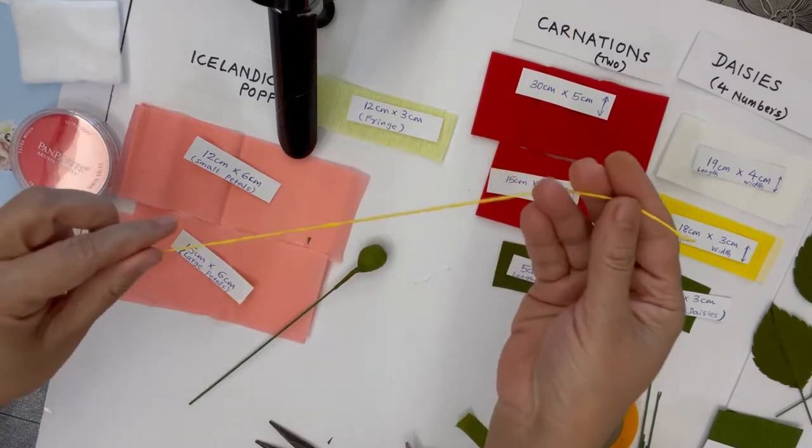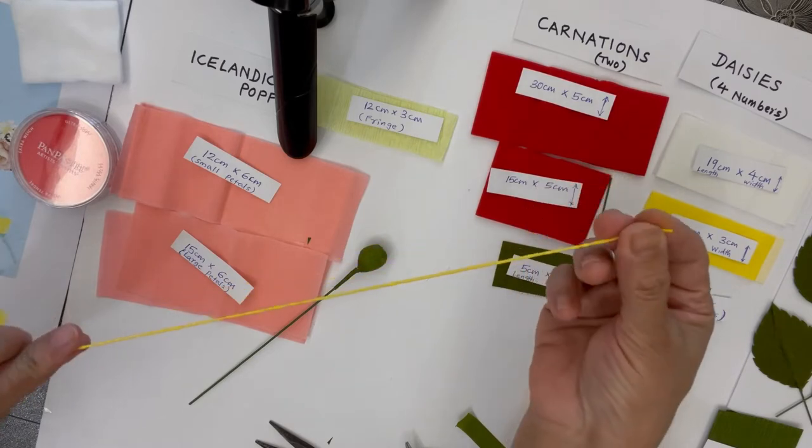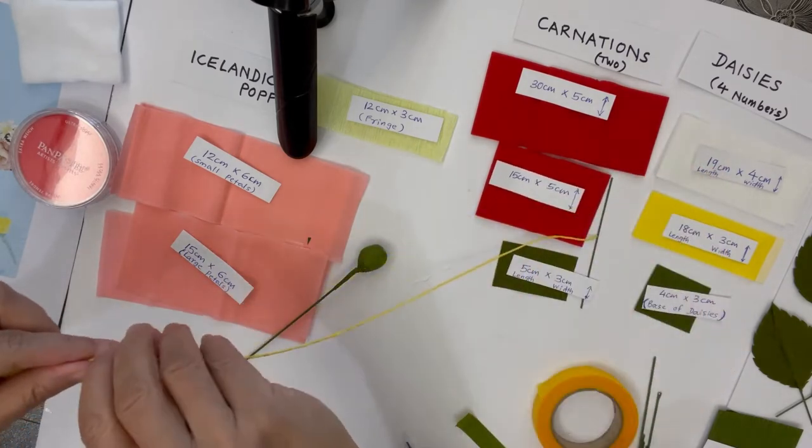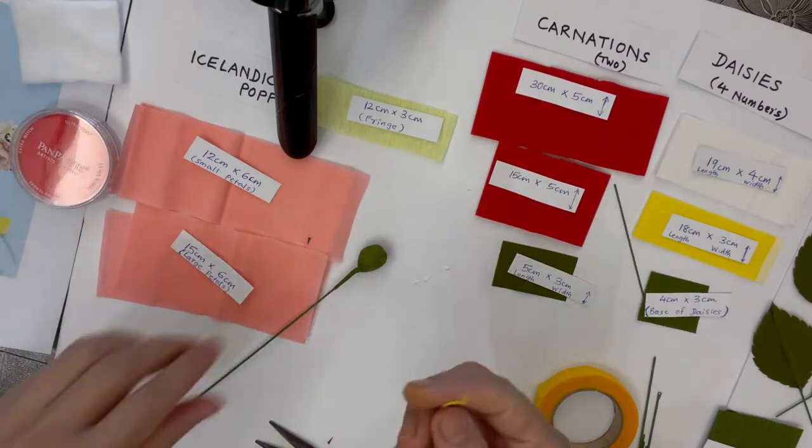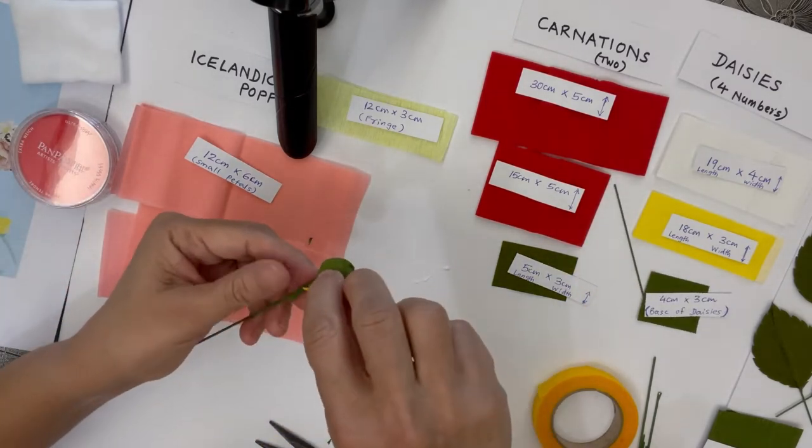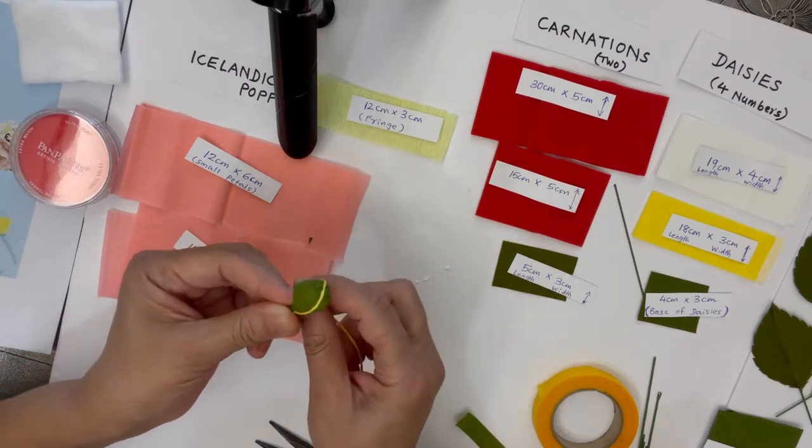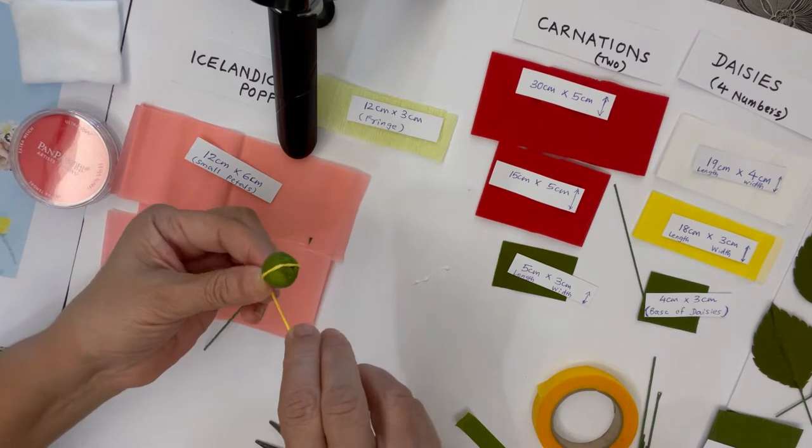If you're making multiple poppy centers, you can cut a longer one and use the remaining for the next poppy flower.